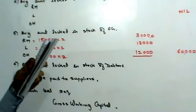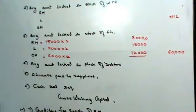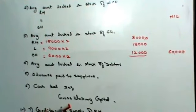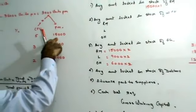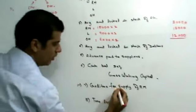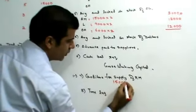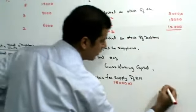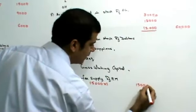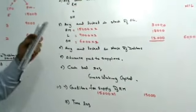They have given you that credit allowed to suppliers of raw material is 1. Creditors is here. Raw material is 15,000. So this is going to be 15,000 into 1. So that is going to be 15,000. Let's move on ahead.